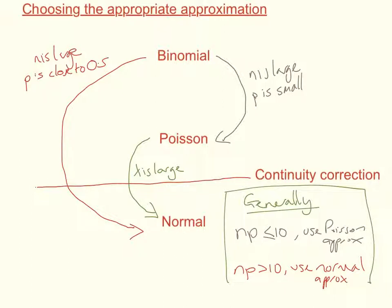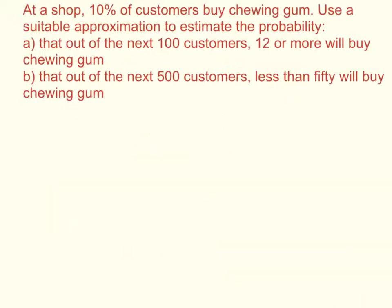Let's look at an example putting this general rule of thumb into practice. At a shop, 10% of customers buy chewing gum. Use a suitable approximation to estimate: (a) the probability that out of the next 100 customers, 12 or more will buy chewing gum, and (b) that out of the next 500 customers, fewer than 50 will buy chewing gum.